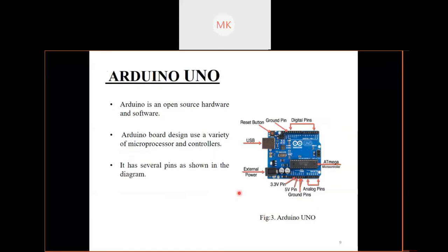Arduino Uno, which can be called the headquarters of our whole project, is an open-source electronics platform based on easy-to-use hardware and software. The boards are equipped with sets of digital and analog input-output pins that may be interfaced with various expansion boards and breadboards. Arduino Uno has 14 digital pins.